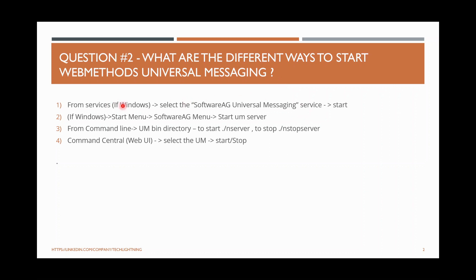For Universal Messaging, if it is Windows, you similarly have the Services option where you can go and start it, and similarly the Windows Start Menu. From the command line, you can go to the Universal Messaging server bin directory, where you will have the nserver command — a batch or shell script — to run it. You run nserver for starting and nstopserver for stopping the Universal Messaging. Also, if you have configured Universal Messaging in Command Central, from there you can also start or stop it.